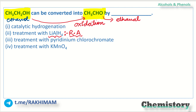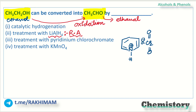Option 3: treatment with pyridinium chlorochromate (PCC). It is a mild oxidizing agent. The structure of pyridinium chlorochromate contains Cr with a double bond O, another double bond O, an O⁻, and a chlorine. This mild oxidizing agent will convert our primary alcohol into an aldehyde. So option 3 is absolutely right.